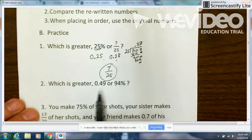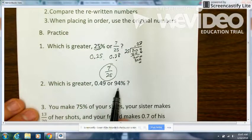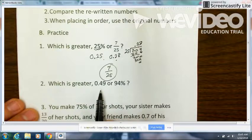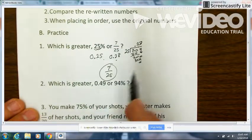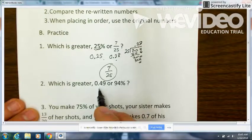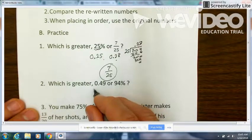Change them to be the same form. You could change them both to be decimals or both to be percents. If this one's a percent, I want to change this one to a percent. I would multiply that...